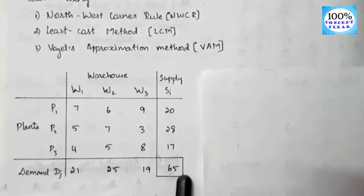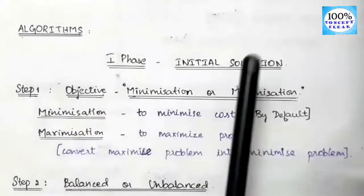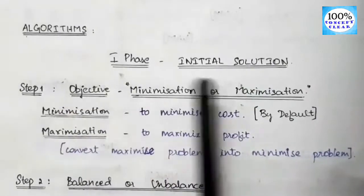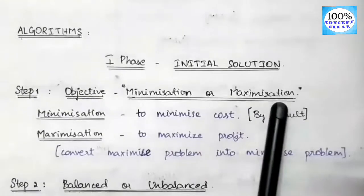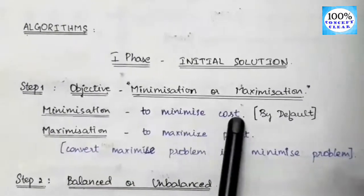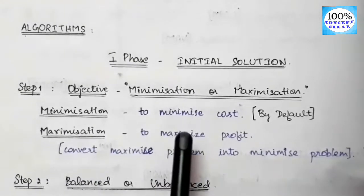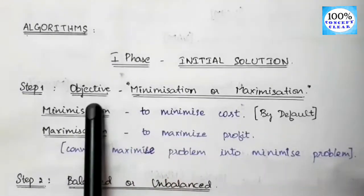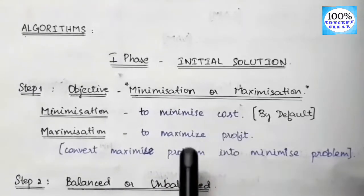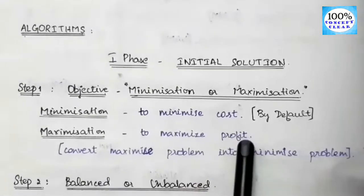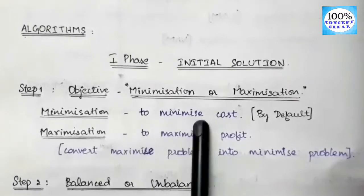Let's solve this using the algorithm. The first phase is finding the initial solution. Step 1: identify the objective — minimization or maximization. Minimization means to minimize cost; maximization means to maximize profit. If nothing is specified in the problem, then the sum is minimization type by default.